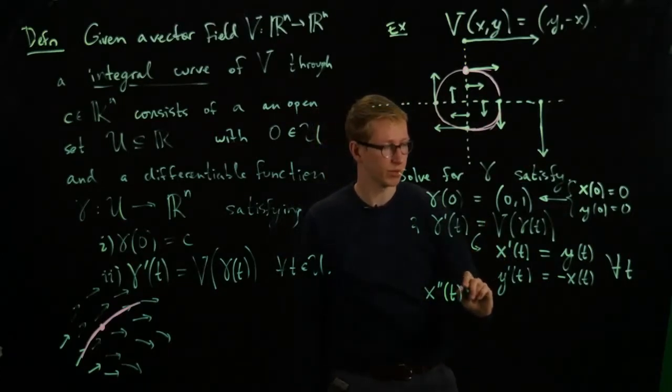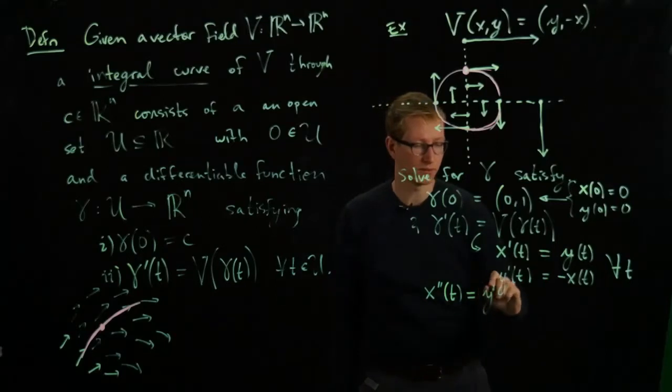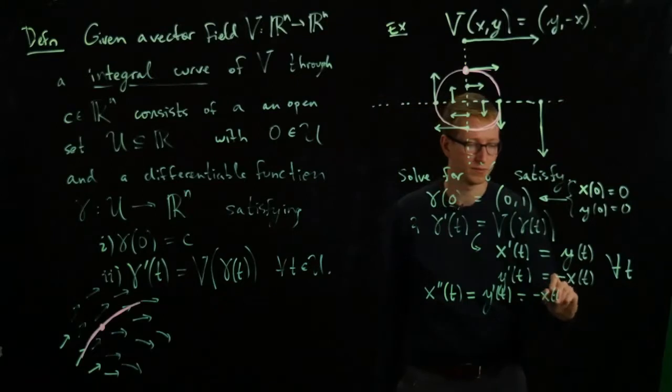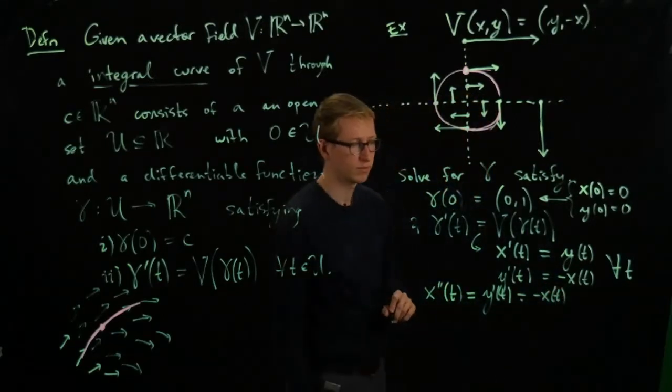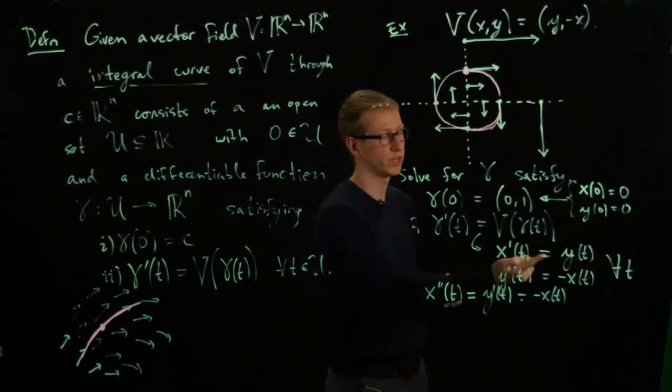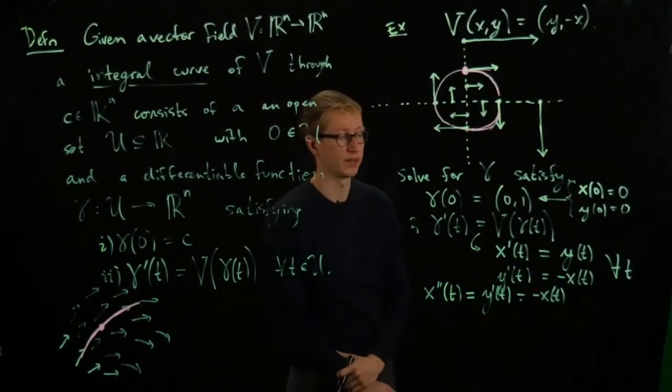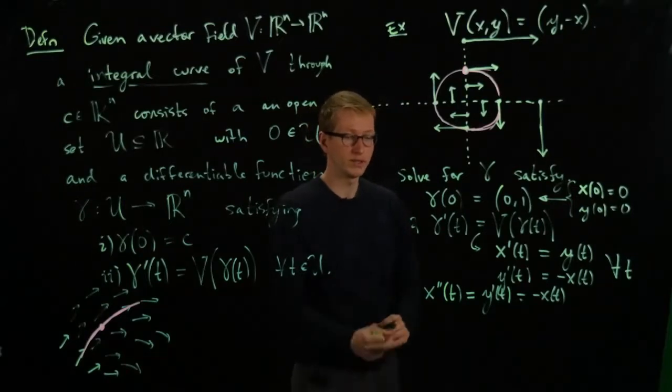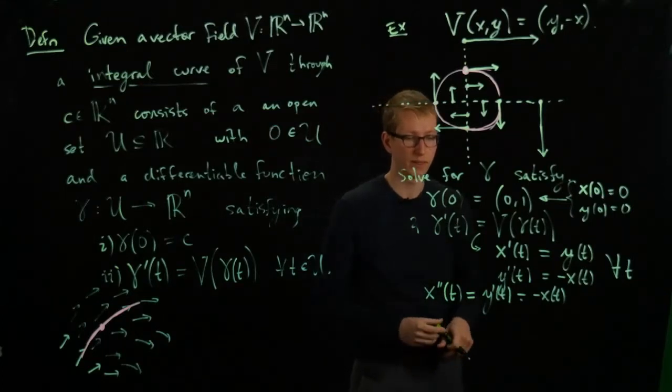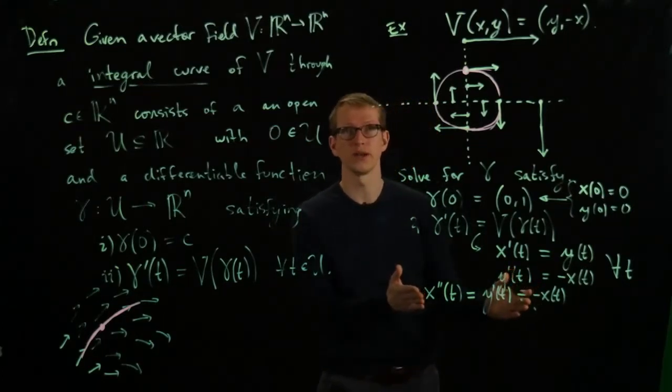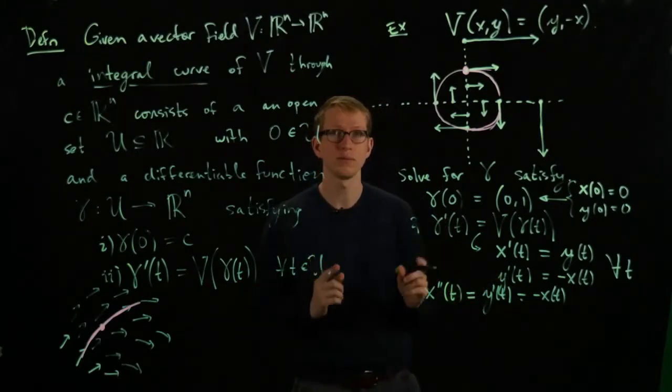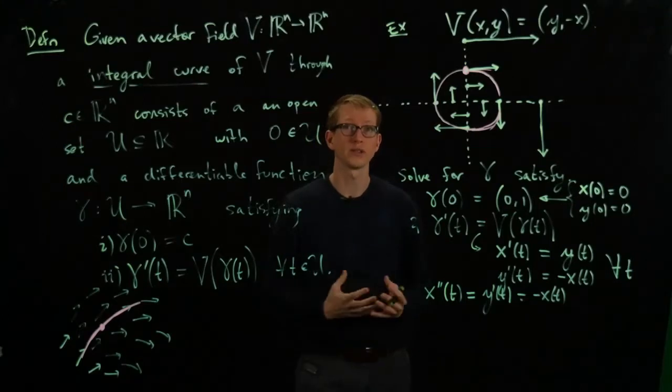So x''(t) equals y'(t), but y'(t) equals -x(t). And a similar equation holds if we plug in y'', we'll get y'' equals -y. So what's a solution of this equation? A solution of this equation, well, think about it like this. If you have a function of a single variable, and you take its derivative twice, and you get back that same function, multiplied by minus one, what are some examples of those functions?